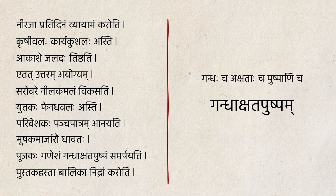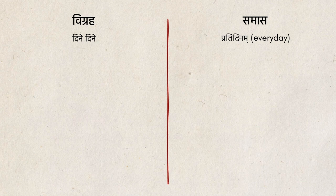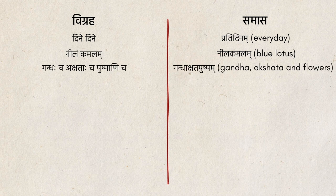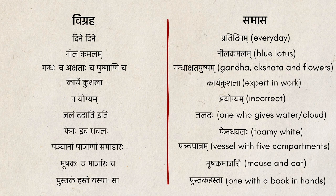So here, दिने दिने is विग्रह and प्रतिदिनम् is समास। नीलं कमलं is विग्रह and नीलकमलं is समास। गंधाच अक्षताच पुष्पानिच is विग्रह and गंधाक्षत पुष्पं is समास।